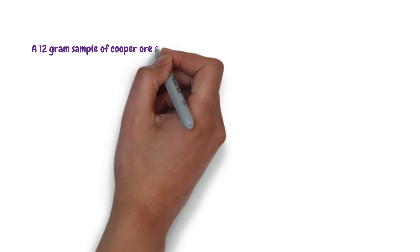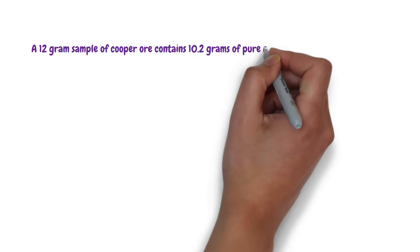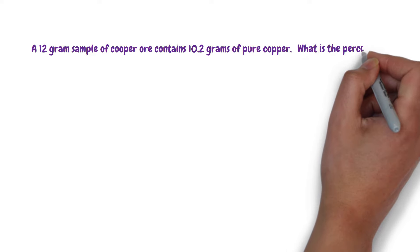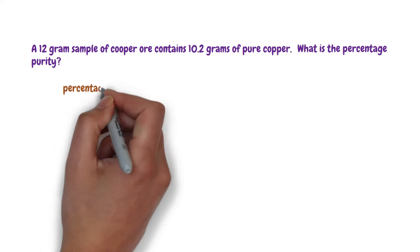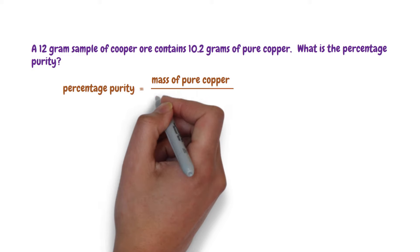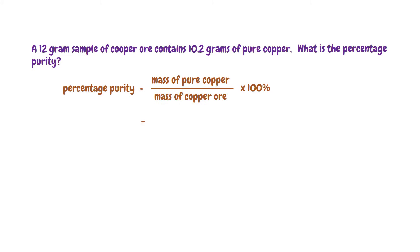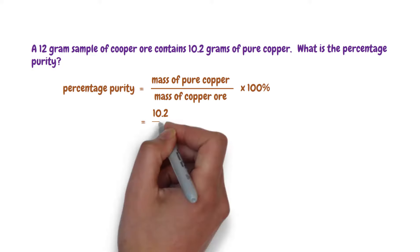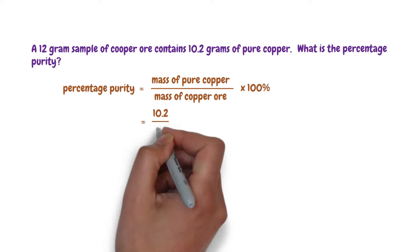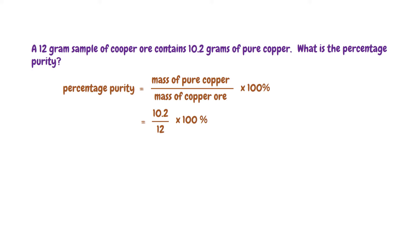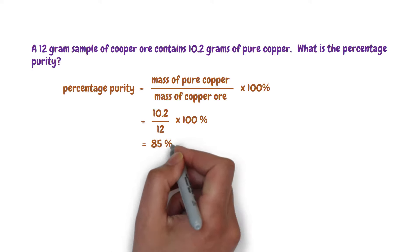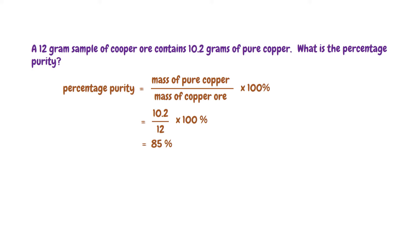The first question: A 12-gram sample of copper ore contains 10.2 grams of pure copper. What is the percentage purity? Percentage purity equals the mass of pure copper over the mass of copper ore, times 100%. The mass of pure copper is 10.2 grams and the mass of copper ore is 12 grams. 10.2 over 12, times 100%, gives 85%. Therefore, 85% is the percentage purity of this copper ore.